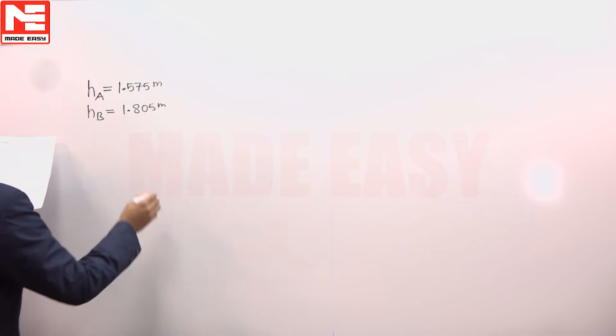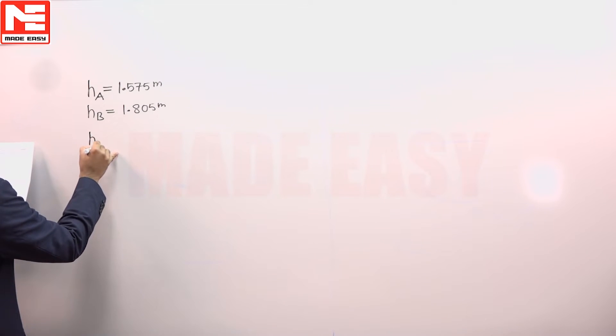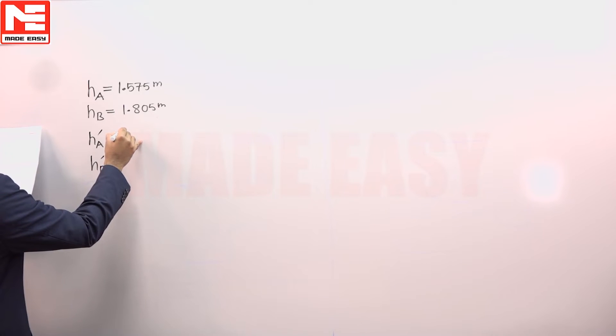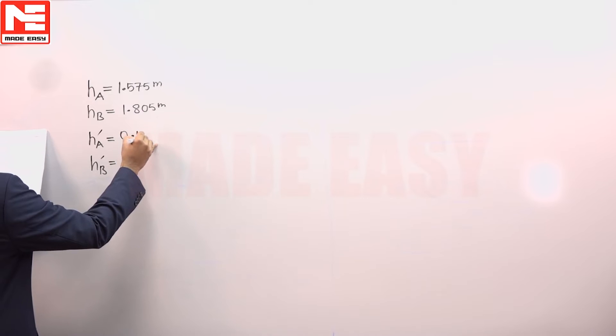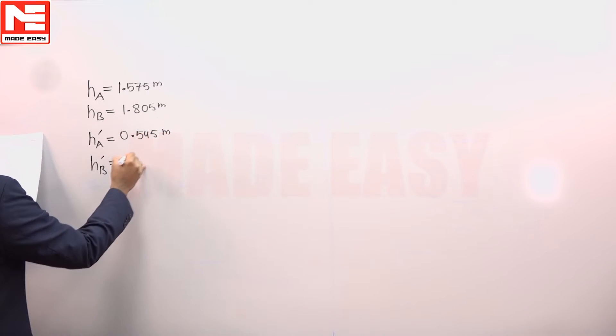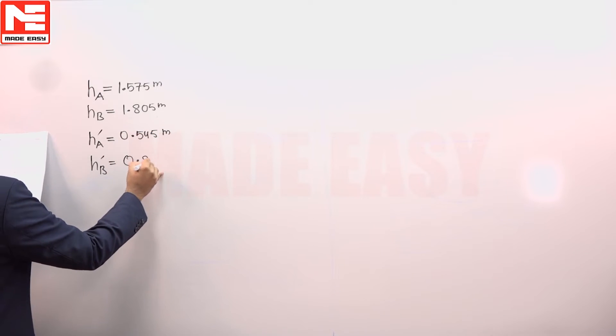When the instrument is shifted to B, the staff reading at A is 0.545 meters and at B it is 0.825 meters.